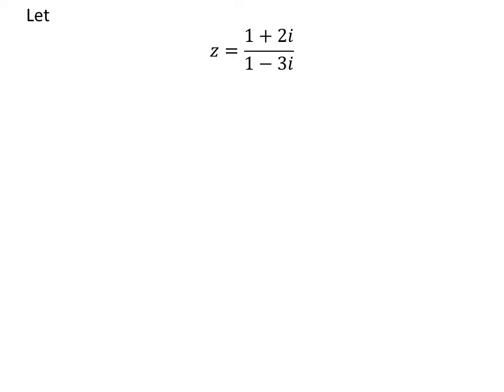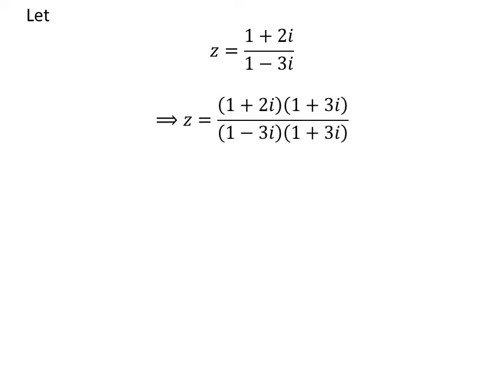Let us assume z be equal to 1 plus 2 times i upon 1 minus 3 times i. Let us first rationalize the complex number.